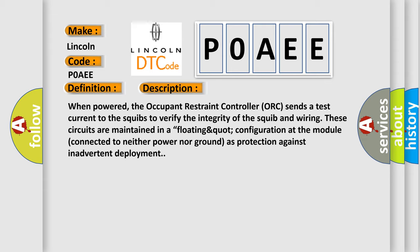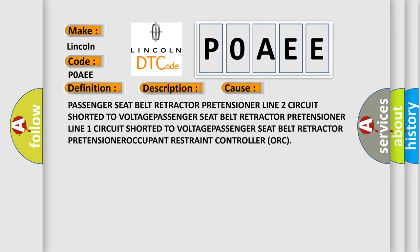This diagnostic error occurs most often in these cases: Passenger seat belt retractor pretensioner Line 2 circuit short to voltage, and Passenger seat belt retractor pretensioner Line 1 circuit short to voltage.